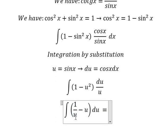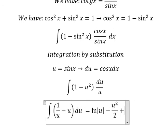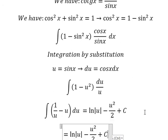The integration of one over u is ln of the absolute value of u. The integration of u is u squared over two, and we add the constant c. Where u equals sine x.